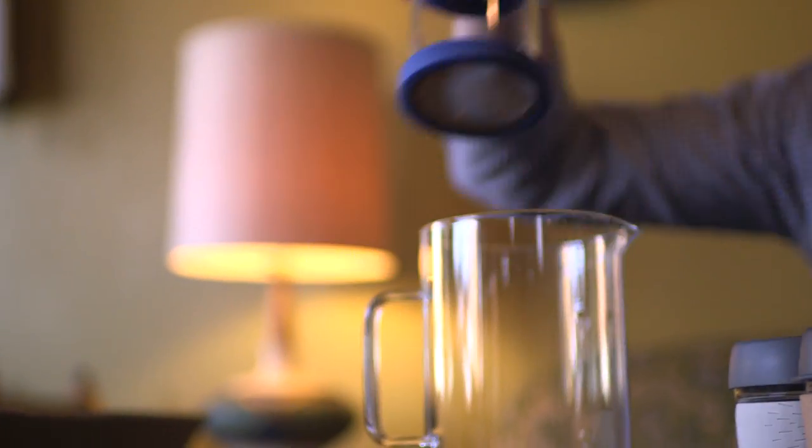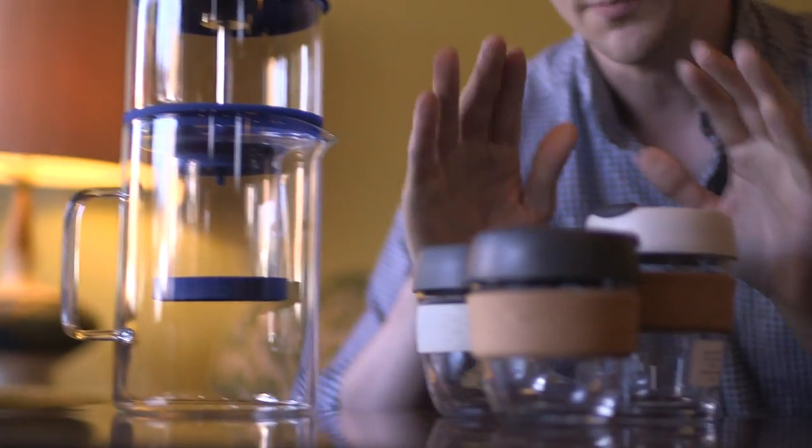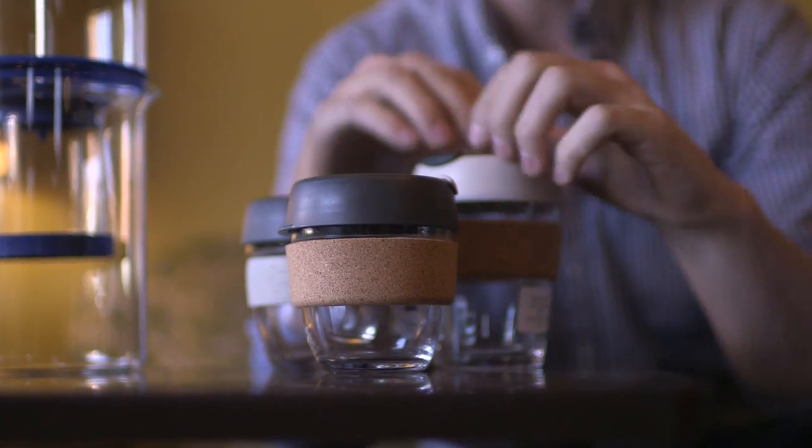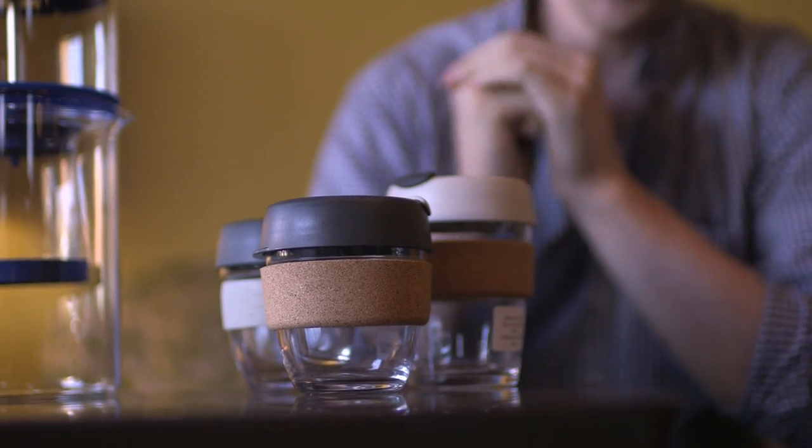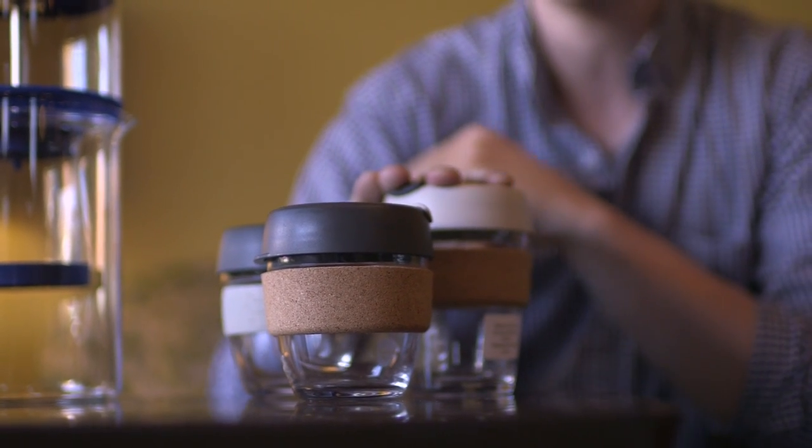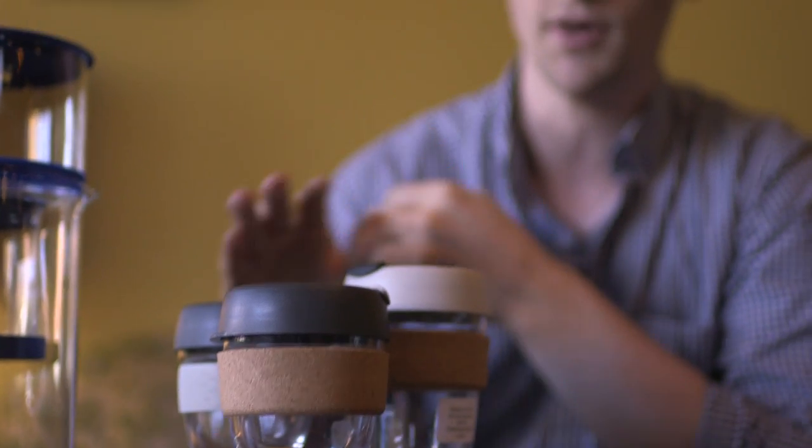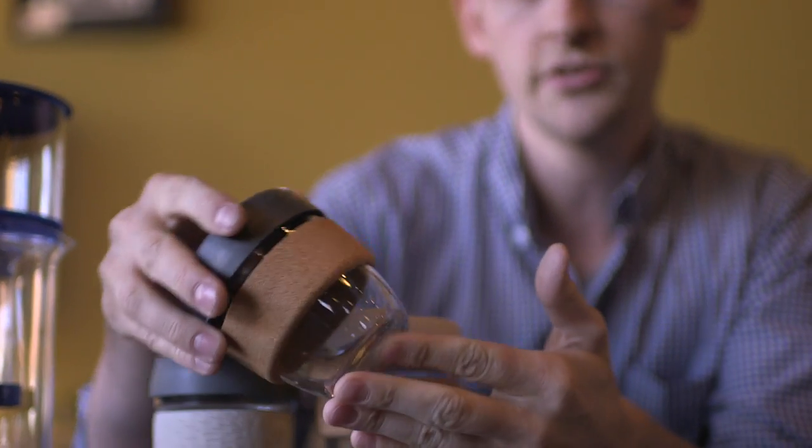So moving right along, we've got Keep Cups. These little guys have been pretty popular. They're allegedly the first barista standard reusable cup. These are the brew series, which is the glass model Keep Cup. So if you're familiar with Keep Cup at all, the big changes here are the borosilicate glass.